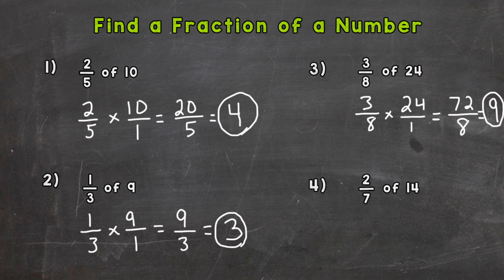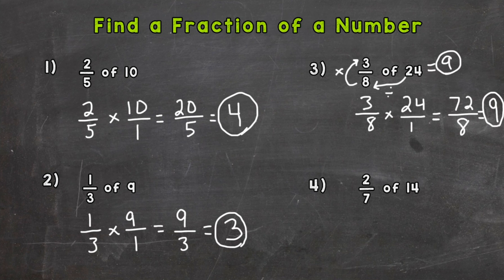The other way to do this is to divide first. Take 24 and divide by 8, which tells us what 1 eighth of 24 is. Then multiply by the numerator — in this case, 3 — to get 3 eighths. So 24 divided by 8 is 3, then multiply by 3 to get 9. We get the same answer. You can divide first and then multiply by whatever the numerator is.